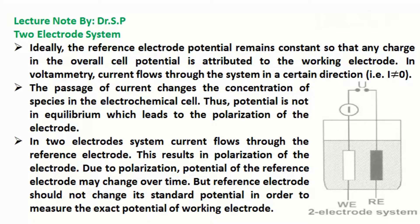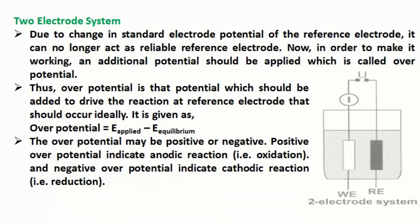Due to polarization, the potential of the reference electrode may change over time. But the reference electrode should not change its standard potential in order to measure the exact potential of the working electrode. Due to the change in standard electrode potential of the reference electrode, it can no longer act as a reliable reference electrode. In order to make it work, an additional potential called over-potential should be applied.